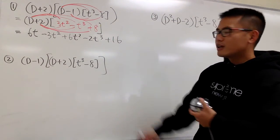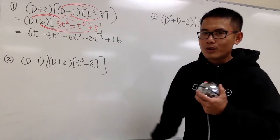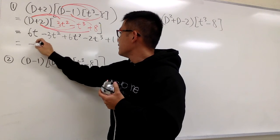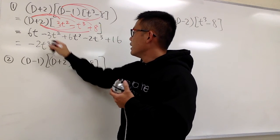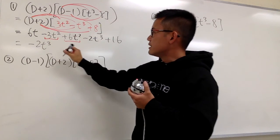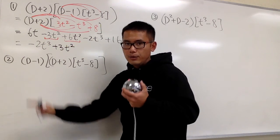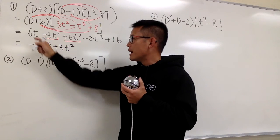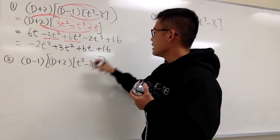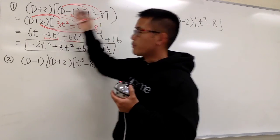We can combine the terms and put them in order. Negative 2t³, and combining negative 3 plus 6 gives plus 3t², plus 6t, and plus 16. So this is the result for number 1.